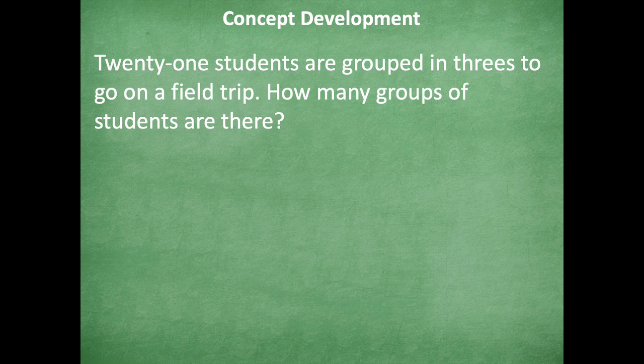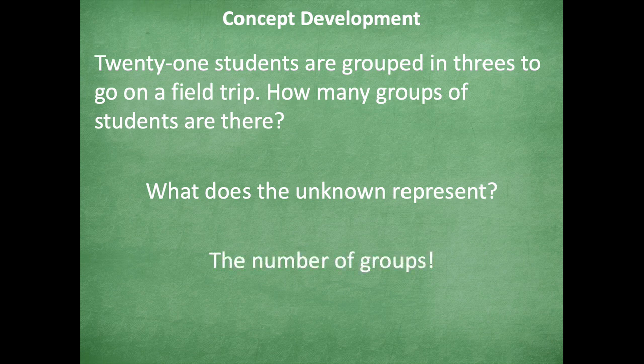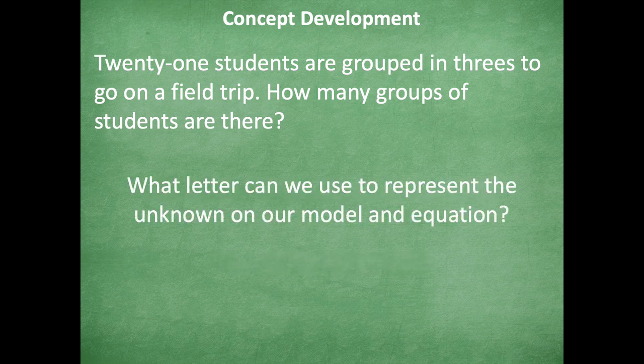All right. So here's another problem. 21 students are grouped in threes to go on a field trip. How many groups of students are there? So what does the unknown represent in this problem? Yeah, it's the number of groups because that's what the question is asking us.